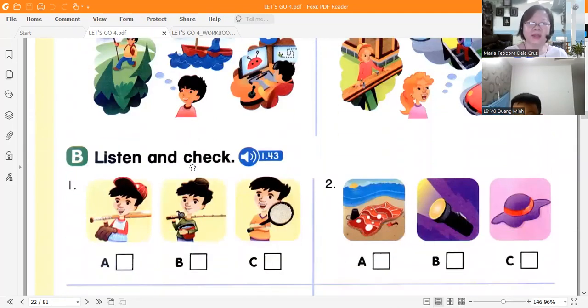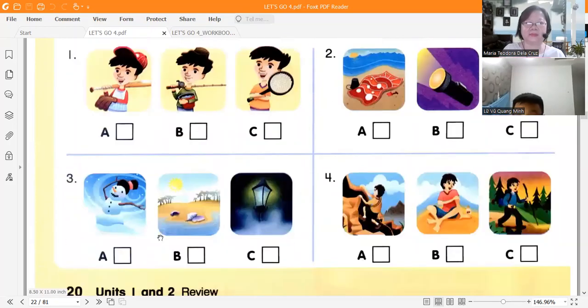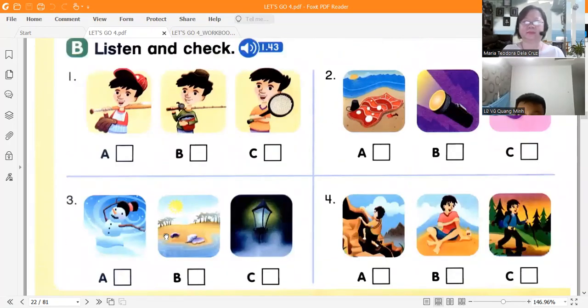Page 20, B, listen and check. Number one: he's going to go fishing. Number two: she needs a towel. Number three: it's going to be foggy. Number four: he wants to climb a mountain.